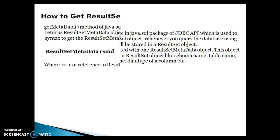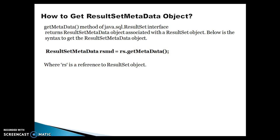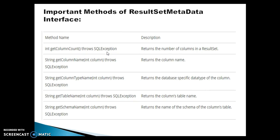Now, how do you get the ResultSetMetadata object? We have a getMetaData() method in the ResultSet interface which returns the ResultSetMetadata object associated with a ResultSet object. Below is the syntax: if you have a reference of ResultSet, you can call getMetaData() on it and you will get the ResultSetMetadata object.